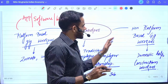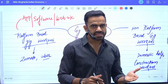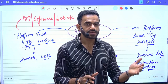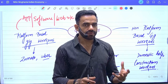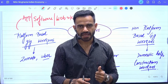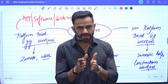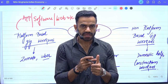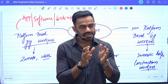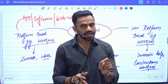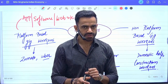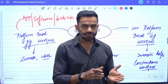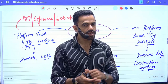Apart from that, there are non-platform-based gig workers, meaning they do not receive their gig through some platform such as an app, website, or software. For example, conventional workers like domestic help — our domestic help is not a full-time member of a particular house; she works in house one, then house two, then house three, so she is a gig worker but not a full-time worker of any particular house. Another example is construction workers — they are also gig workers but non-platform-based.